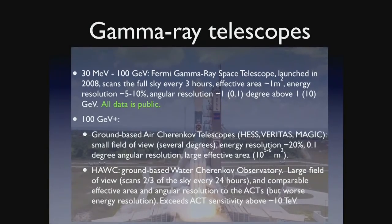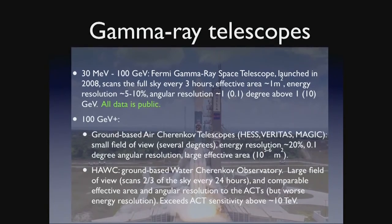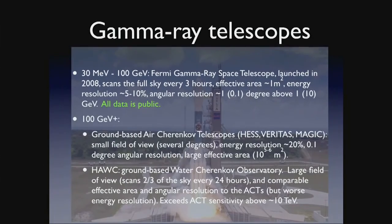Let me begin by talking about gamma rays. In particular, I'm going to start with the Fermi Gamma-ray Space Telescope, my favorite instrument in terms of number of papers written on the data. Fermi is a gamma-ray telescope studying the energy range between about 30 MeV and 100 GeV. It's been up in the sky since about 2008. It scans the full sky every three hours, has an effective area of order a square meter, energy resolution about 5 to 10 percent, and angular resolution between about 0.1 and 1 degree. The great virtue of Fermi from a theorist's perspective is that they make all their data public, updating on a weekly basis, so it's possible for people outside the collaboration to dig straight into the data.